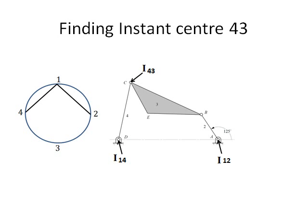We inspect the linkage. We can see that at C, link 4 connects to body 3. The pin fixes body 4 to body 3 and therefore the bodies have 0 relative velocity at this point. We have found an instant center. We label it I43 to represent the location of the instant center. Going back to the circle diagram, we can draw a line between 3 and 4 to represent this instant center.